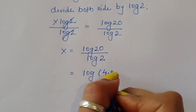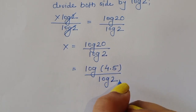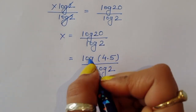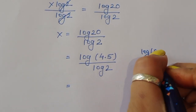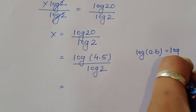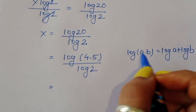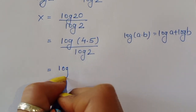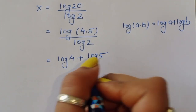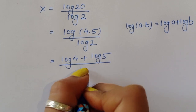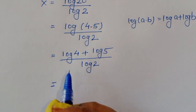Now for log 20, we can write 20 as 4 times 5, so this becomes log of 4 times 5 divided by log 2. Using the formula log of a times b is equal to log a plus log b, we get log 4 plus log 5, all divided by log 2.